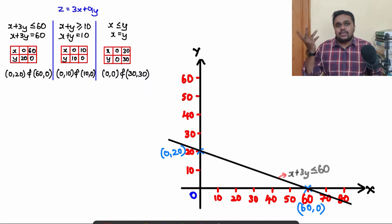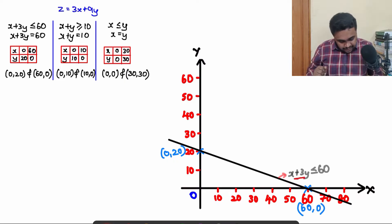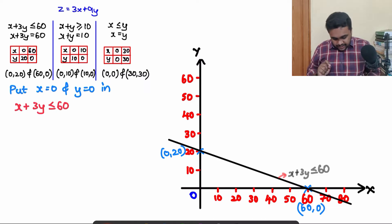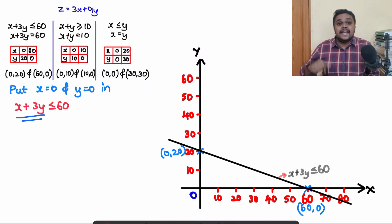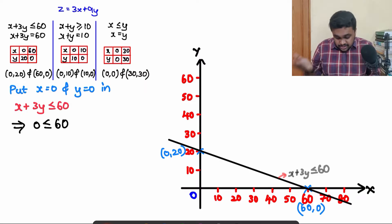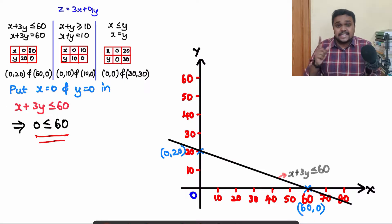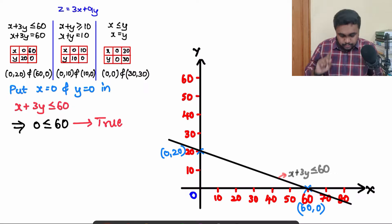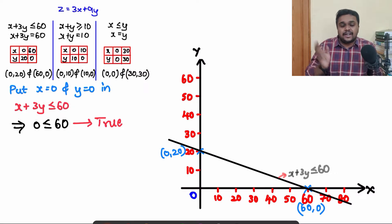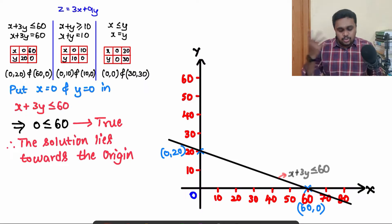To determine the shading side for x + 3y ≤ 60, I substitute x = 0 and y = 0. LHS = 0 + 3×0 = 0. Is 0 ≤ 60? This statement is true. So the solution lies towards the origin — I will shade towards the origin.